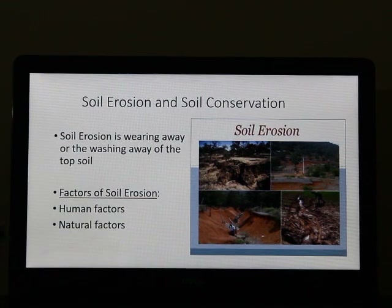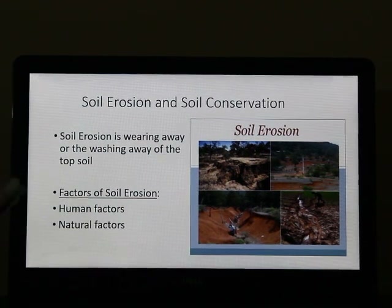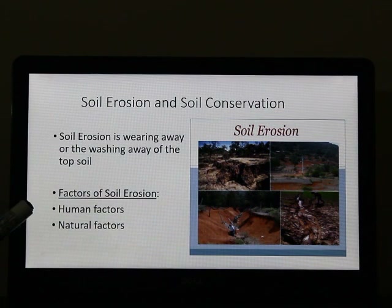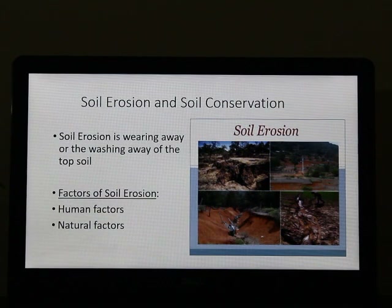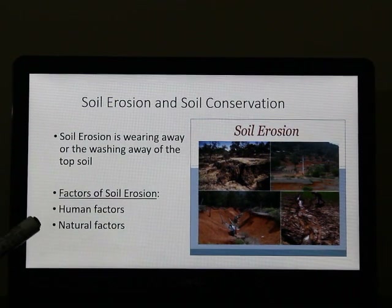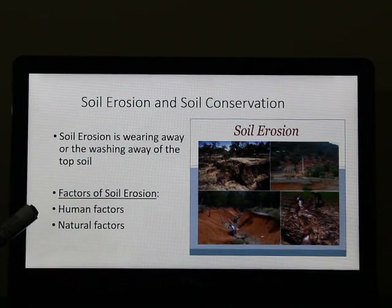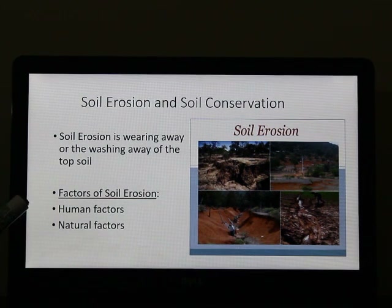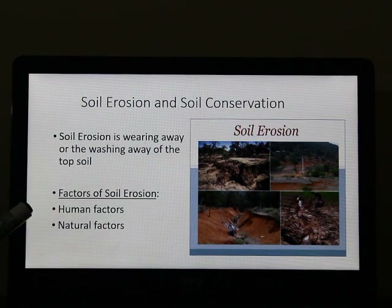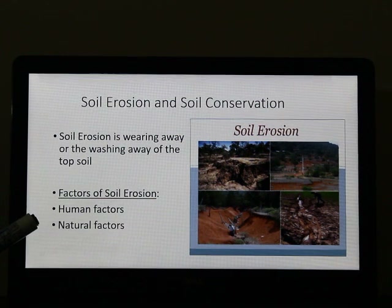There are certain factors involved in soil erosion. Basically there are two factors: human factors and natural factors. Human factors involve deforestation, overgrazing, construction work, mining, and ploughing in a wrong method. All these are the wrong ways and cause soil erosion. This we have already discussed in one of the previous topics.